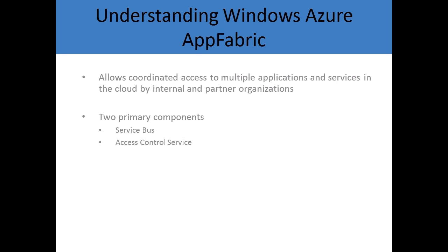One is known as the service bus, and this one basically acts as a proxy service to control who communicates with what. The access control service is how we can secure the applications and services where firewall, directory service, or identity services are concerned. So we'll have a quick look at both.